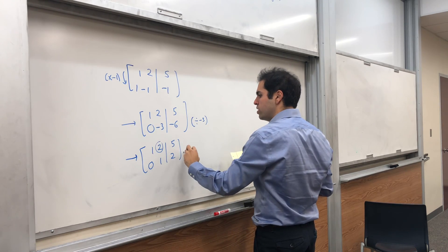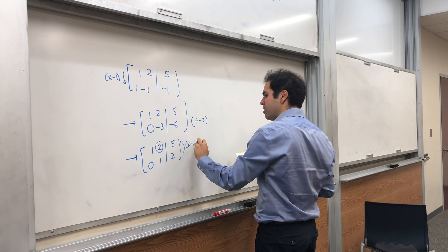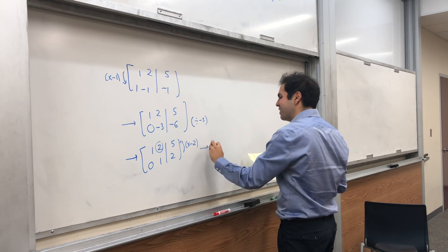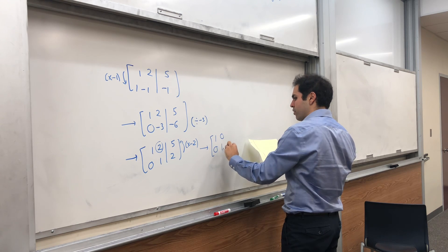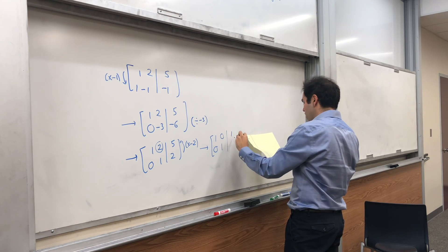And then turn this 2 into a 0. So turn the frown upside down. And we get, I think, [1,0; 0,1]. And I think, [1,2].